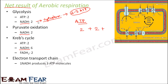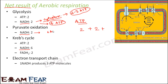So for now, we will consider that in the cytoplasm, whatever NADH were produced, each NADH could produce 2 ATP. So that means 2 NADH could produce 4 ATP. If you talk about the pyruvate oxidation NADH, this is in the mitochondria, so 1 NADH could produce 3 ATP, giving 6 ATP here.